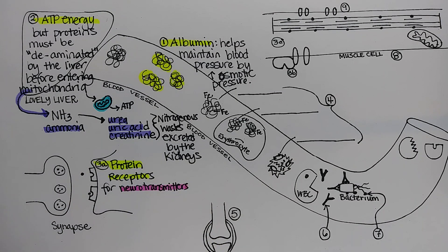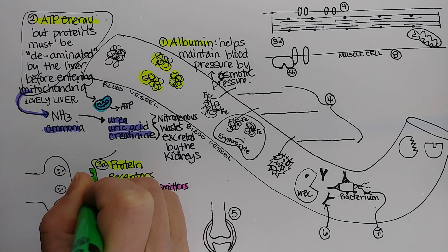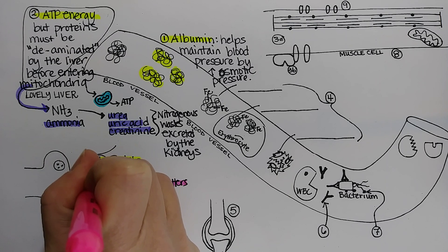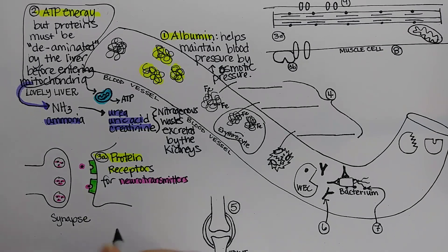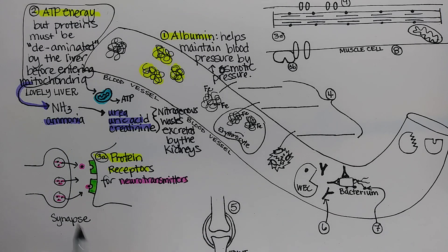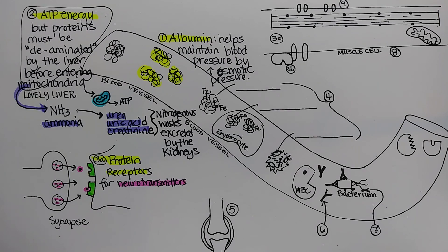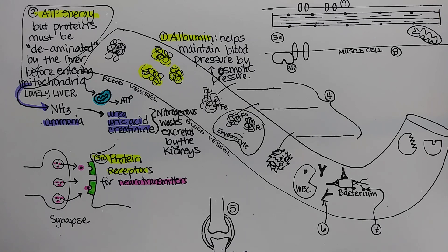Let's color the receptors green and the neurotransmitters pink. The neurotransmitters get released into what's called the synaptic cleft and then they bind to receptors. You may have heard of dopamine or serotonin as examples of neurotransmitters, but in order for that dopamine or serotonin to work in your brain, it has to bind to a receptor. That will be the end of video one — this is protein part one, and then I'll start with protein part two.